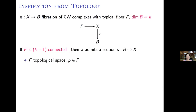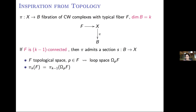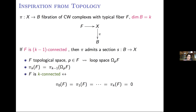Let me remind you of the notion of connectedness from topology. If you take any topological space F and a point P, we can look at the loop space — the space of loops at point P — with the compact open topology. We define the k-th homotopy group of F recursively as the (k−1)-th homotopy group of this loop space. We say that F is k-connected if all homotopy groups from pi_0 up to pi_k are zero.